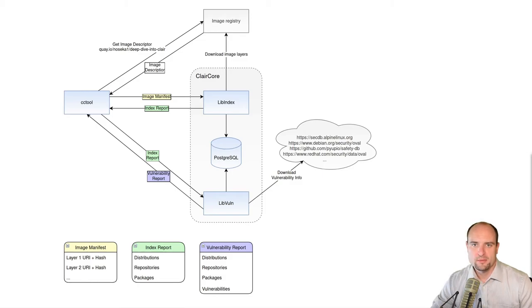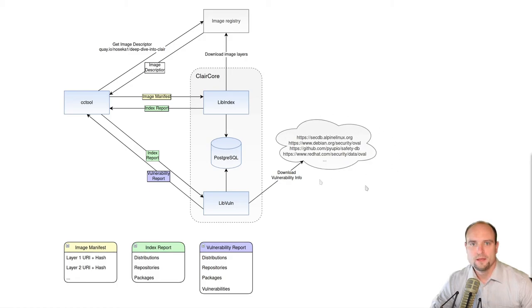Point number two: Clair matches the content found in the image with the vulnerability information provided by individual distributors. As such, Clair will only be able to find vulnerabilities in distribution packages. If you are creating your own packages, Clair won't be able to find any vulnerabilities there.